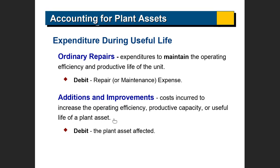If you add something to the property that increases its useful life, or the addition is something extra and something big, then it is added to the book value of the asset and depreciated. It's added to the cost of the asset and depreciated. For example, if you have a building and you put a new sink in one of the bathrooms, that would be a repair cost. But if you add another bathroom — build an entirely new bathroom — that is a large cost, it increases the value of the property, and it would be added to the balance sheet.